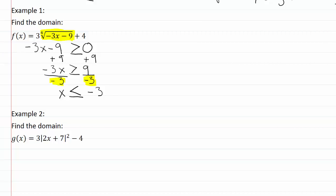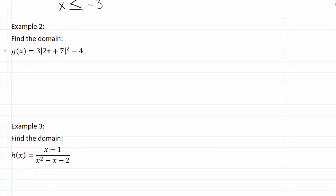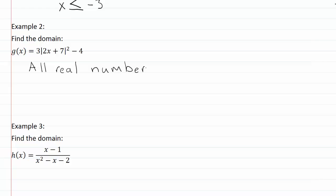Now let's look at example two. This one asks us to find the domain when g(x) is three times the absolute value of two x plus seven, squared, minus four. The two problem points to watch for are fractions with zero denominators and even roots with negatives underneath. In this case, there are no even roots and no fractions. So any number plugged into x gives a valid value, meaning the domain is all real numbers.